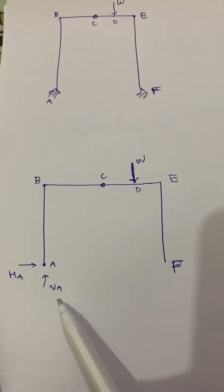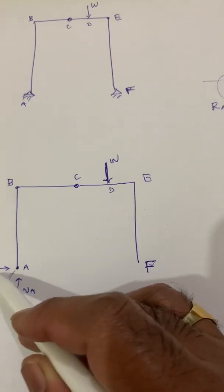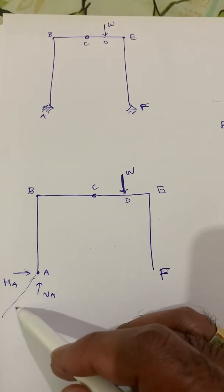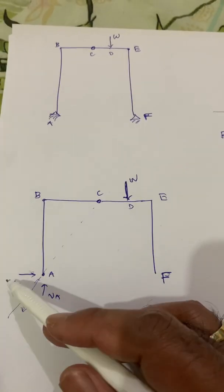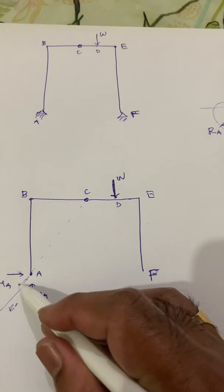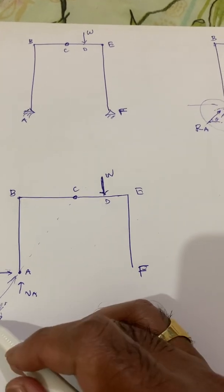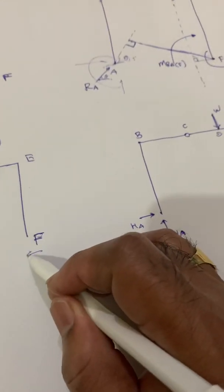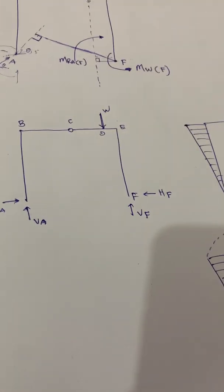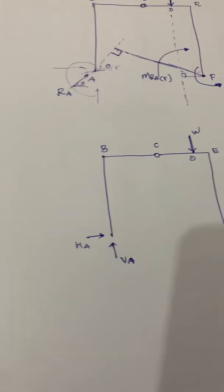So this force Ra, passing through C, satisfies zero moment at C. We can now resolve Ra into two components: horizontal Ha and vertical Va. Because of the direction of Ra passing through this line, we resolve it into two directions. Ha should be in this horizontal direction, and since it is acting in this direction at F, the corresponding reaction should be in the opposite direction.